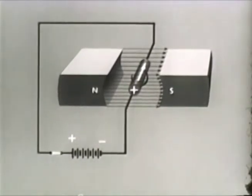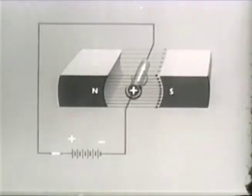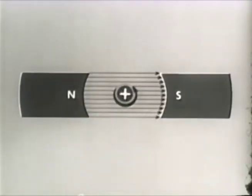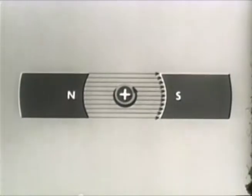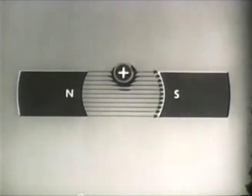Conversely, when current flows in the opposite direction — that is to say away from us — the field of the conductor opposes the main field above the conductor. This aids the main field below the conductor, distorting the lines down. The field below the conductor is thus made stronger, while the field above the conductor is made relatively weaker. This forces the conductor to move up. With this basic principle of motor action understood, we can now examine the DC motor.